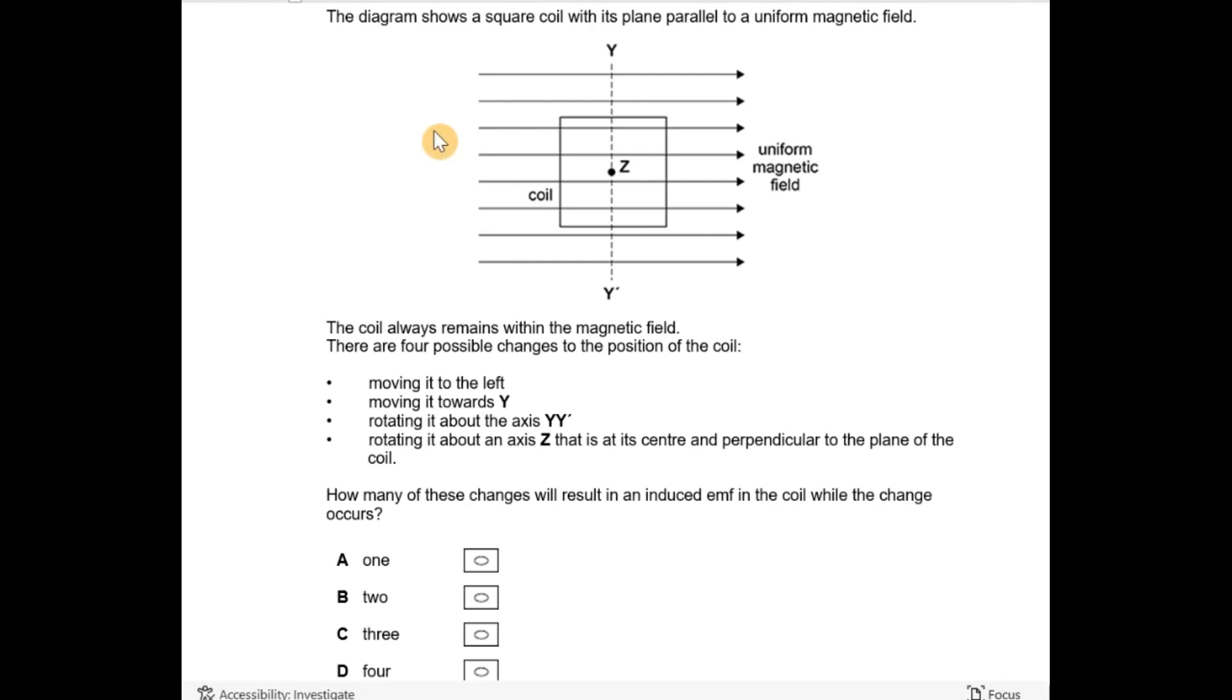If you got the answer A, well done. If you want to hear my explanation, keep listening. So a diagram shows a square coil with its plane parallel to a uniform magnetic field.